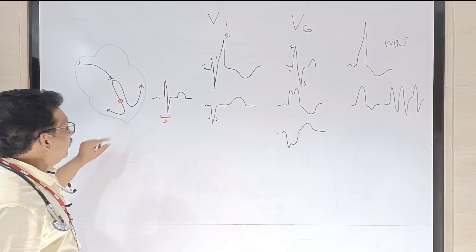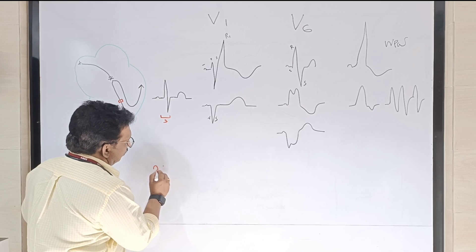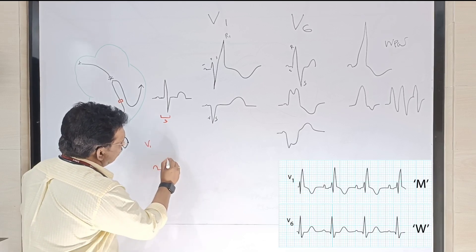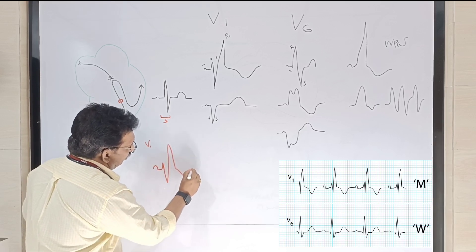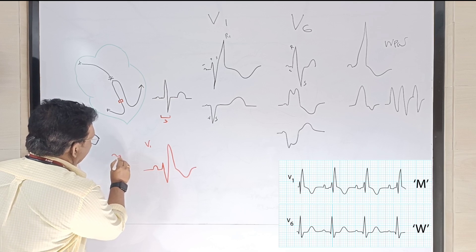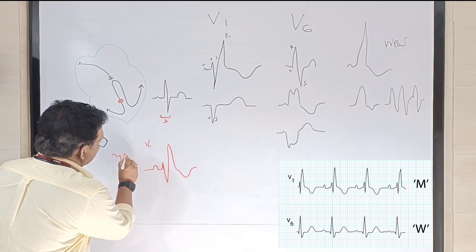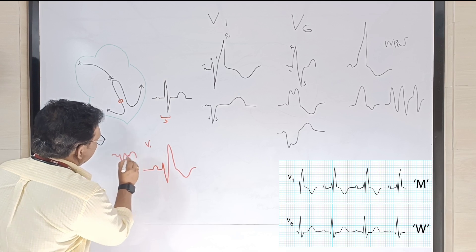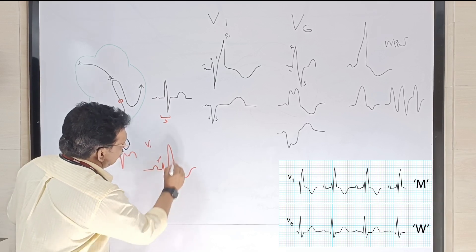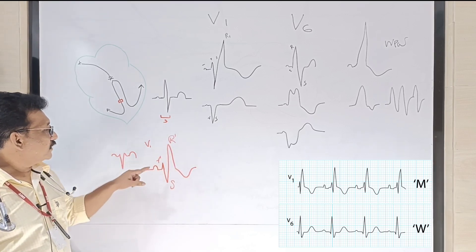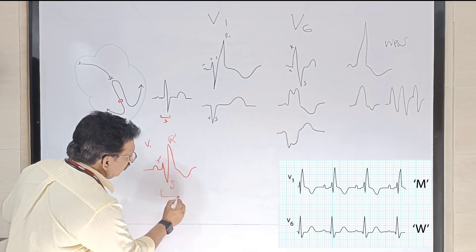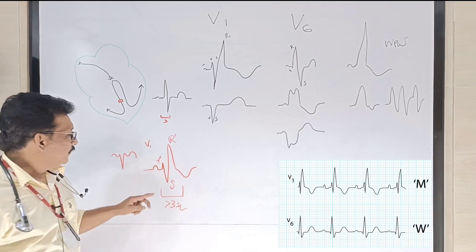When there is a block in the right bundle, you get a typical pattern. In V1 you see a P wave, then a small R wave, then an S wave, then a larger R wave — this RSR' pattern in V1 is a typical feature of right bundle branch block. Because of this block, the QRS complex becomes wider than three small squares.